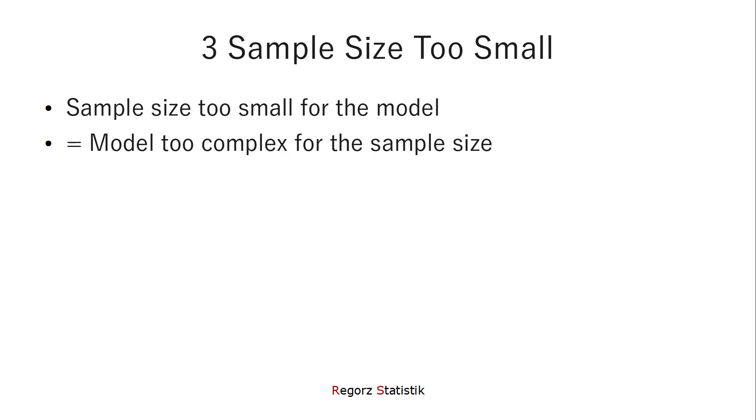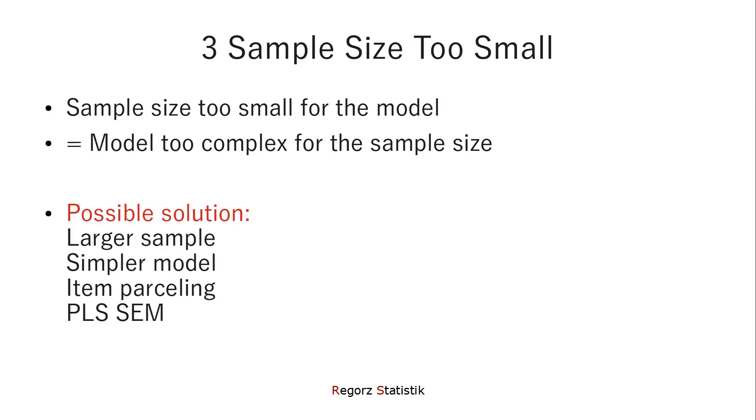Then the sample size could be too small for your model, or, which is more or less the same problem in different words, your model could be too complex for the sample size. There are several different solutions for a problem like that. You could try to get a larger sample, acquire more participants for your study. You could change to a simpler model. You could try to use item parceling, that is combining items into parcels of items. I've made a separate video about that topic. You'll find a link in the description of this video. And you could change to another estimation method, PLS-SEM, that is partial least squares SEM. That algorithm can find solutions for the same model with much smaller samples.